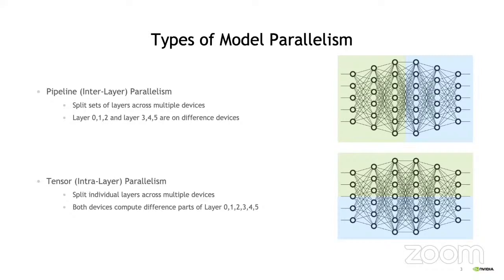The other form of parallelism is tensor-level parallelism. Here, each layer is split across multiple devices. So when using two-way tensor parallel, both devices are computing different parts of all the layers in the model. These two forms of parallelism can be combined to split the model across a large number of GPUs in several ways, and can also be combined with traditional data parallelism to train on an even larger number of GPUs.